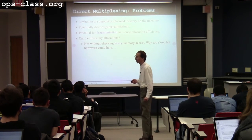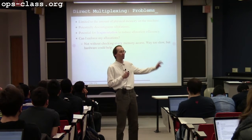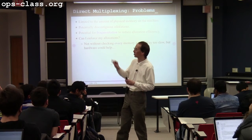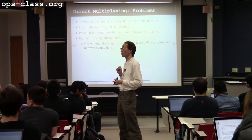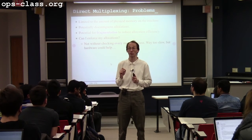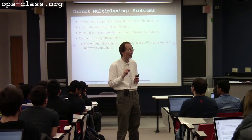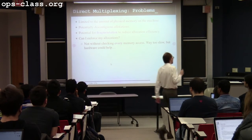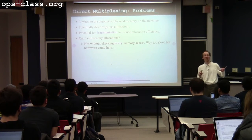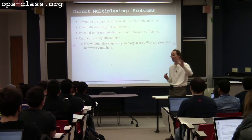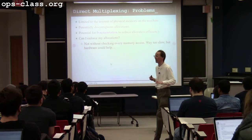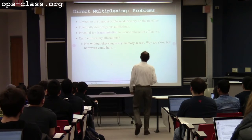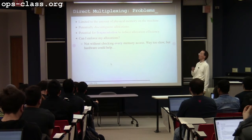One enforcement approach Jeff put on the board: before a process accesses any memory location, it checks with the OS — 'can I access address 123456? Yes. Can I access 123457? Yes.' This sounds like a really bad plan — extremely inefficient. Later when Jeff talks about virtualization, this is actually one of the problems with traditional virtualization: sometimes you have to do byte-by-byte translation, which is one reason traditional virtualization can be slow as molasses. In general, we don't want to do this — we need a better enforcement mechanism.